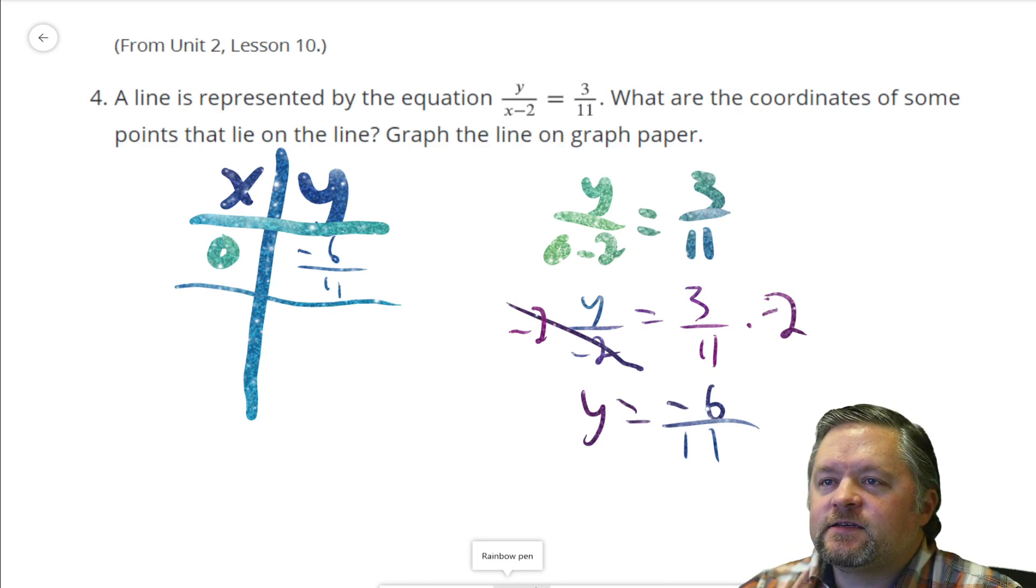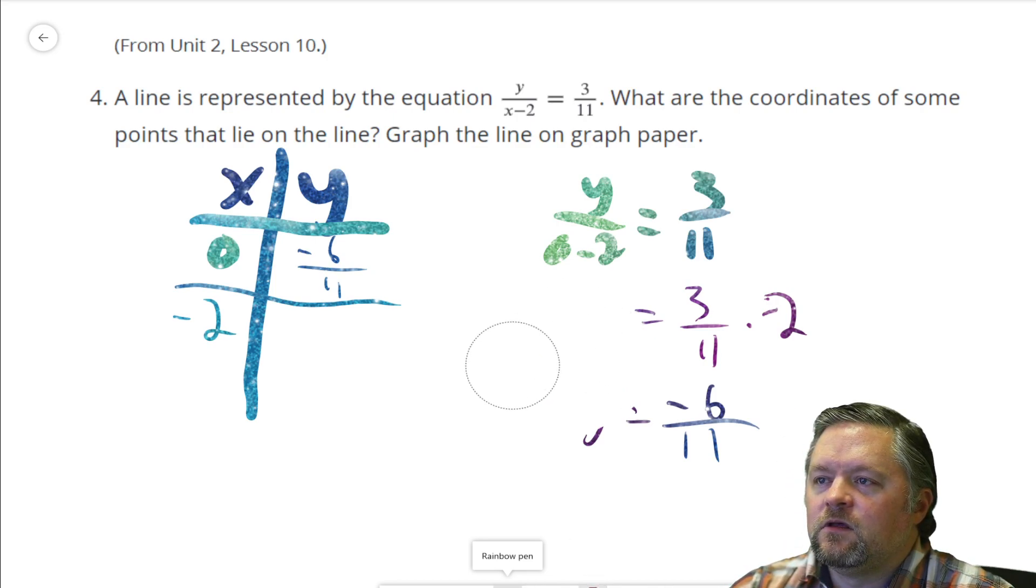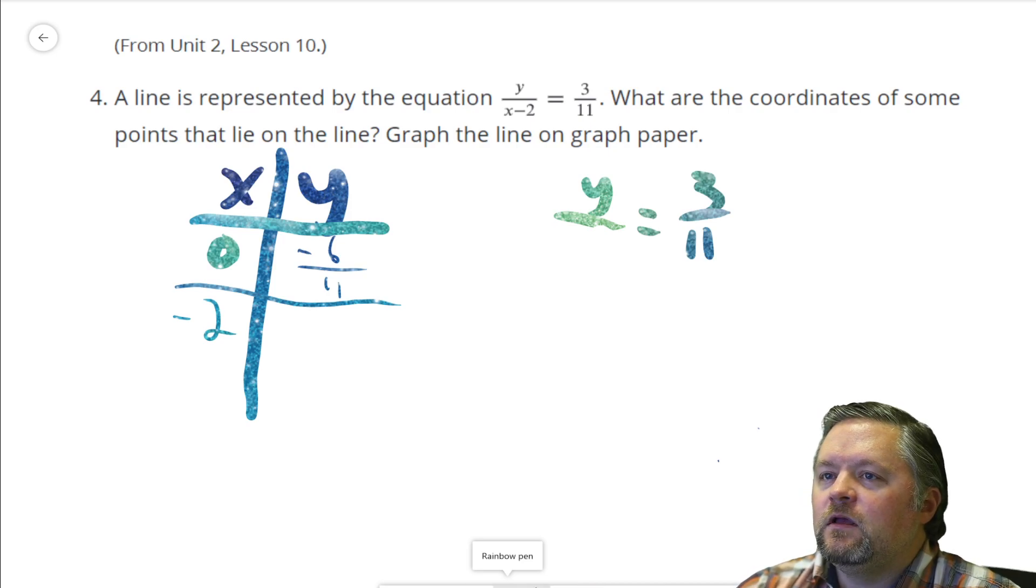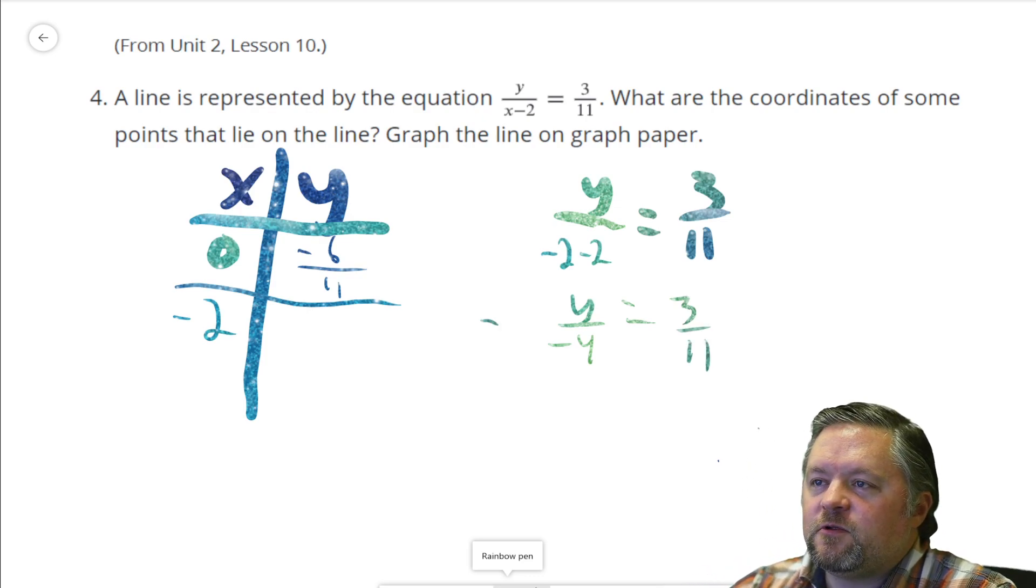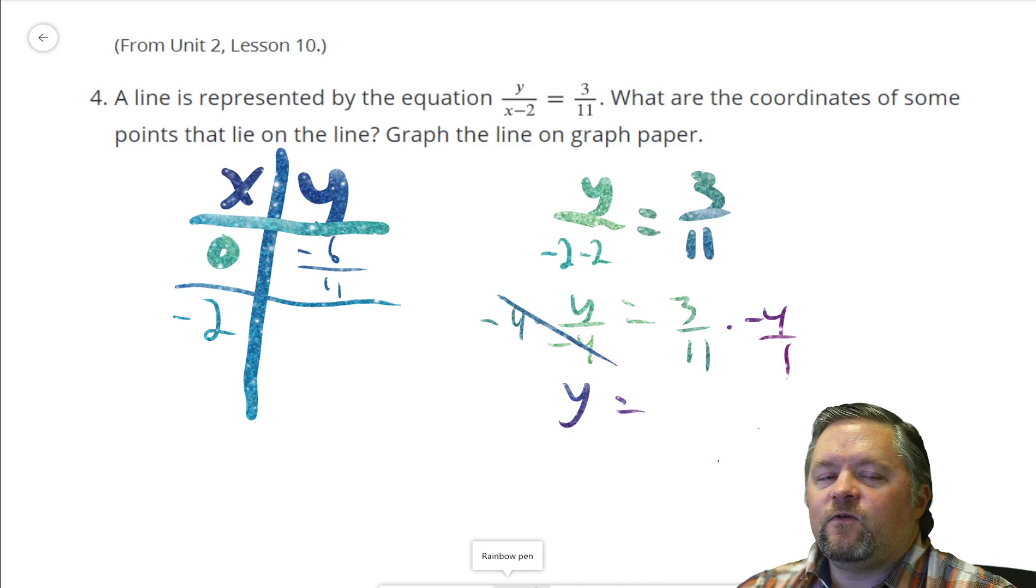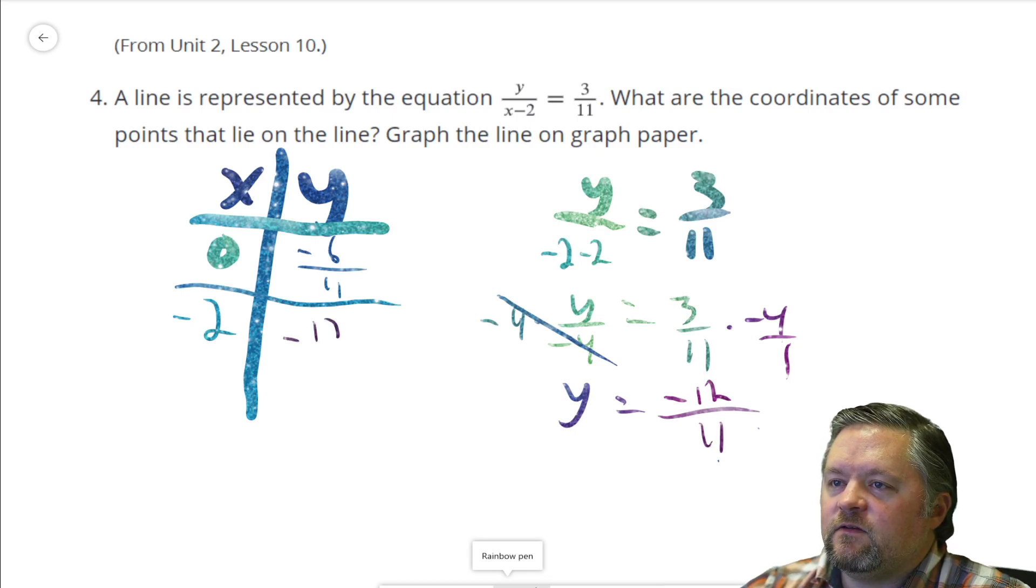How about if x equals negative 2? We can do the same thing we did before and just plug that in. If our x is negative 2, subtract 2. y over negative 2, subtract 2. Well, that's negative 4. So, y over negative 4 equals 3 over 11. How did we get that y by itself? We multiplied each side by negative 4. Multiplying by negative 4, dividing by negative 4, cancel out. We're left with just y times negative 4 over 1, because that's what 4 is. It's 4 over 1 as a fraction. 3 times negative 4 is negative 12 over 11.